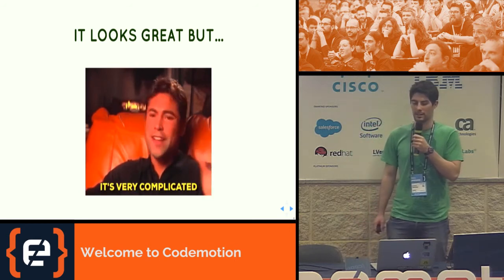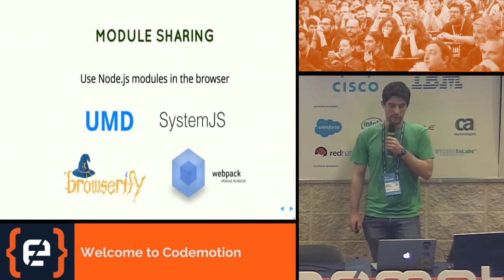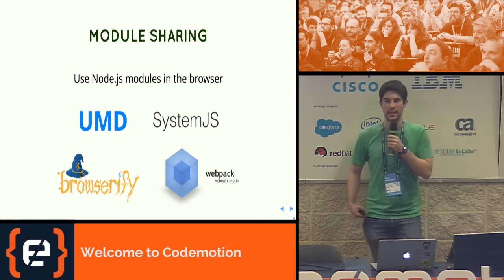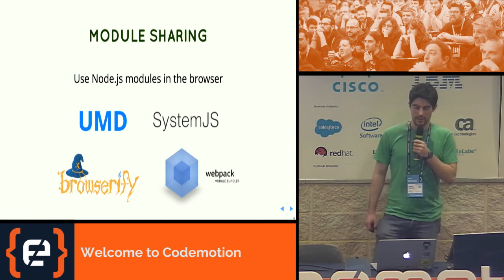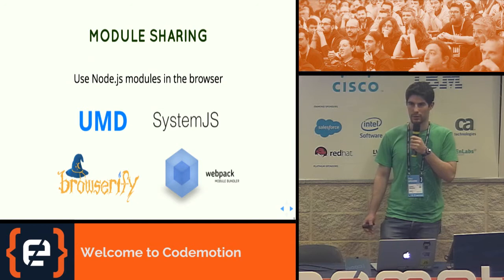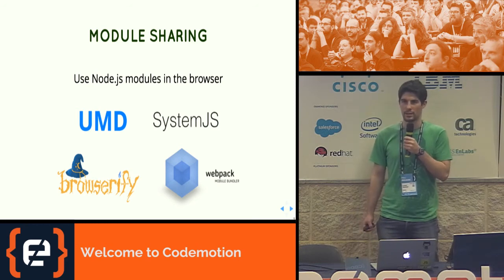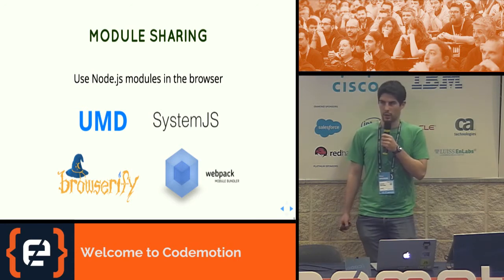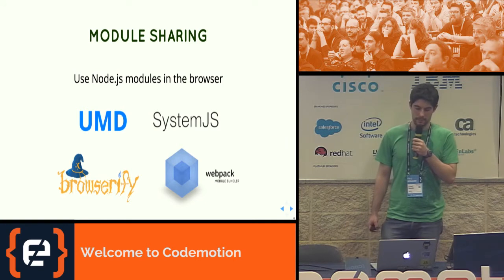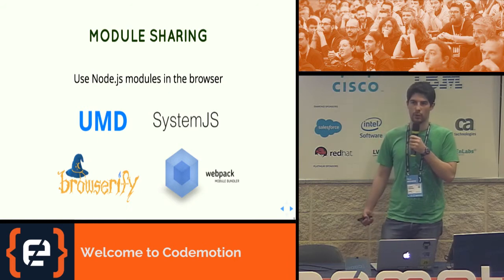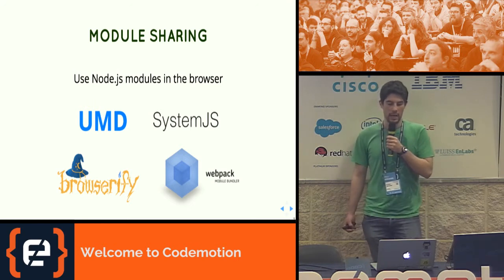Everybody says Universal JavaScript is very complicated and not worth it. My goal today is to show why people say that, and then show you it's not really that complicated. The first challenge is modules — you're used to writing Node.js modules and you want to bring them to the browser. There are different ways to build modules; you can use UMD as a uniform way to publish them. Then you have tools like SystemJS, and ultimately you want to combine modules into chunks using tools like Browserify or Webpack.